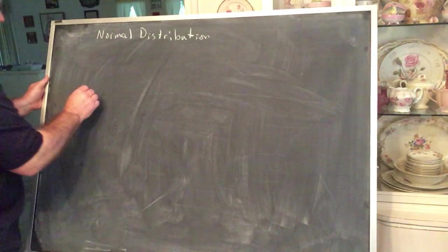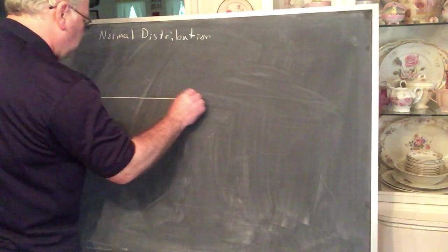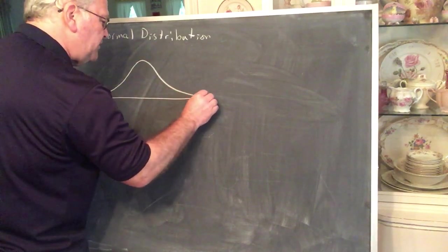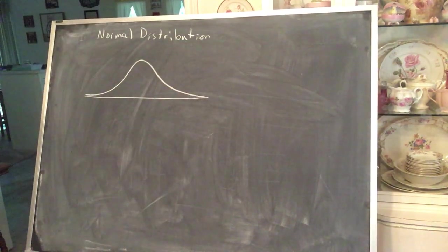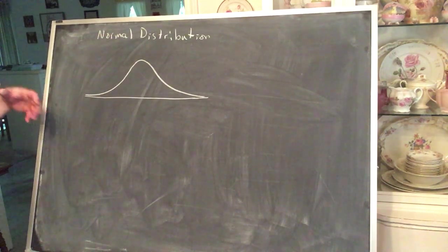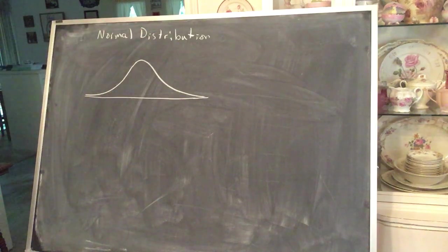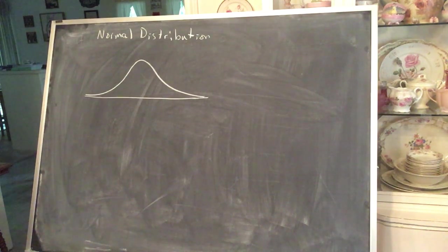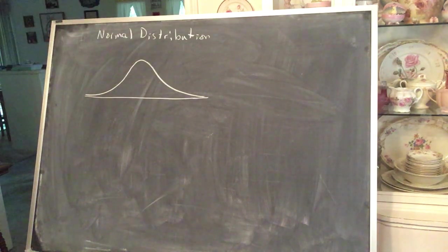The normal distribution is a curve. Some of you may have encountered this in another course — maybe a psychology, sociology, or business course. Sometimes this is called a bell curve because the shape of the curve looks somewhat like a bell. There is a function that describes this and all sorts of theoretical foundation behind it, but we're going to gloss over that. What we have is a curve.